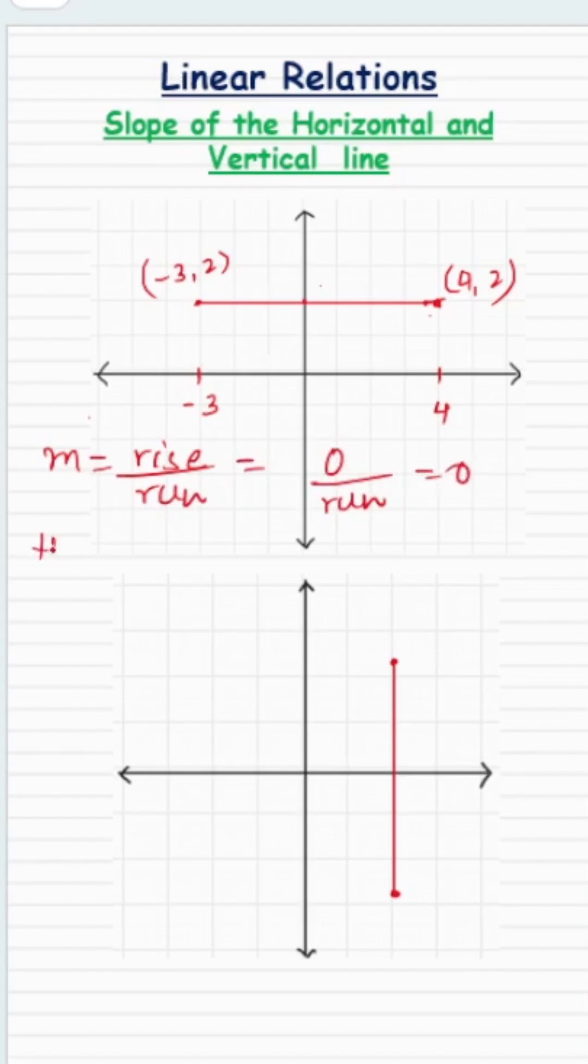So 0 divided by any value gives you 0. So always remember for the horizontal line, the slope is always 0. The horizontal line has the slope of 0. What about the vertical line?